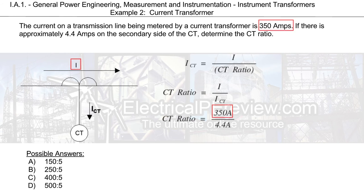When we plug in our numbers, we've got 350 amps as the primary line current, and 4.4 amps as the CT current, also sometimes known as the secondary side of the CT. That's the current being induced into the CT windings from the primary line current.